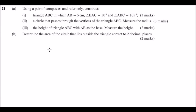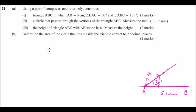You start by making a sketch. You draw a line and measure 5 cm — that is AB. Then, you are told angle BAC is 30°. To get angle 30°, you construct angle 60° and you bisect it. That gives you angle 60°, and when you bisect there, you get half of that angle. So this is where your line should pass — this is angle 30°.